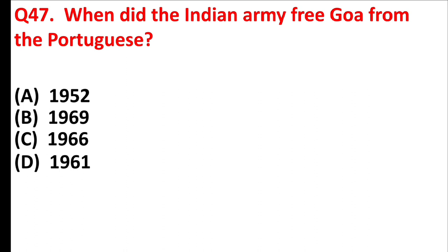When did the Indian Army free Goa from the Portuguese? Answer is Option D, 1961.